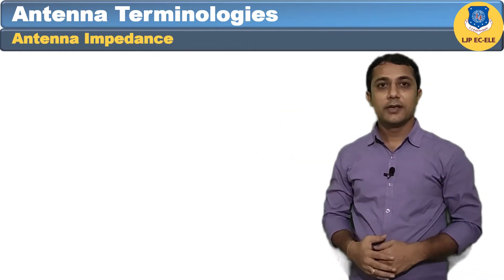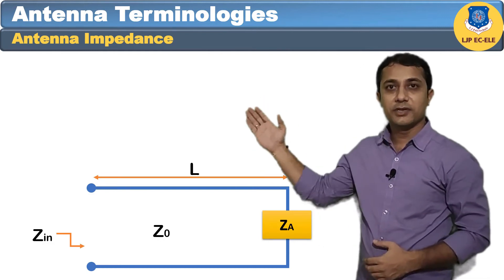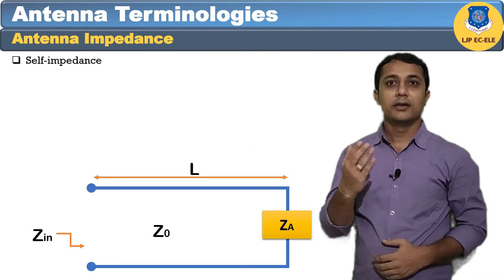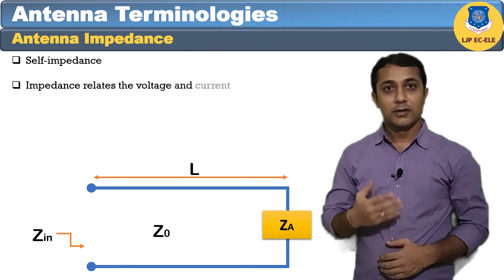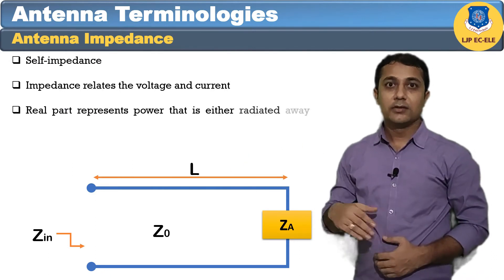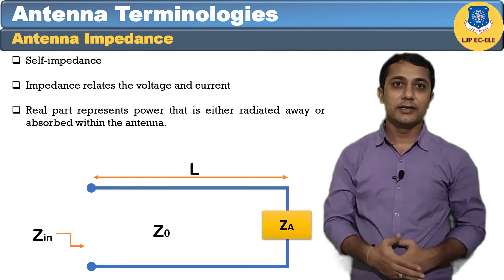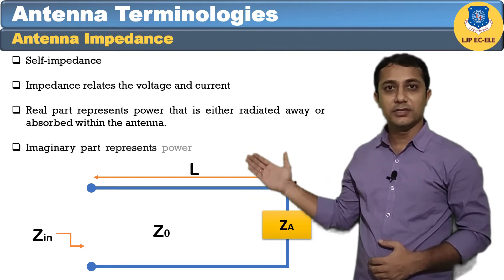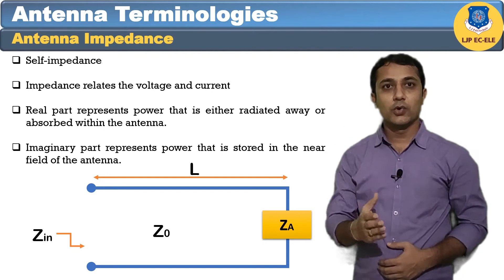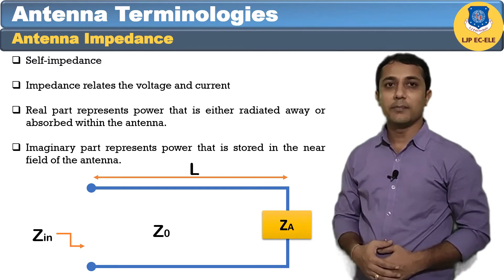The first terminology is antenna impedance. The impedance at which the transmission line carries the RF current from the transmitter to the antenna is known as the self impedance. It relates to the voltage and current at the input of the antenna. The real part represents power that is either radiated away or absorbed within the antenna, while the imaginary part represents power stored in the near field of the antenna.